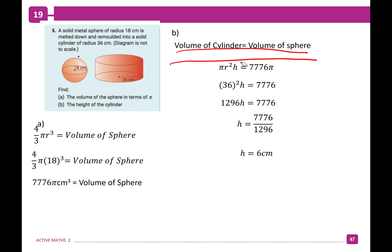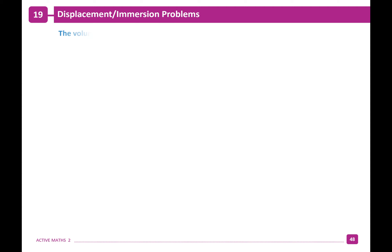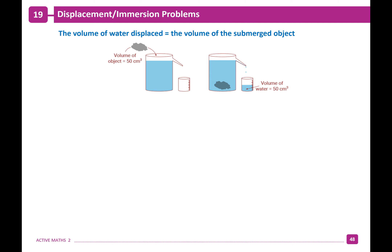That will only get more obvious as you go through school and university — you have to write everything down. Now we're looking at immersion problems, where we're placing an object into water. The volume of water displaced will be equal to the volume of the submerged object. You've already seen that in science — it's called Archimedes' principle. If you place an object in water, the water rises, and the amount displaced equals the volume of the object.